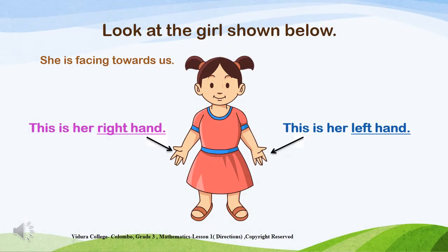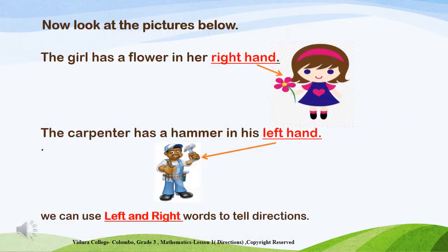Can you see the girl in the picture? She is facing towards us. I have marked with arrows her right hand and her left hand. She has a flower in her right hand. Next you can see a picture of a carpenter. He has got a hammer in his left hand. Now you can see I have used left and right words to tell directions.